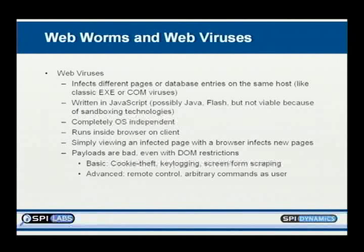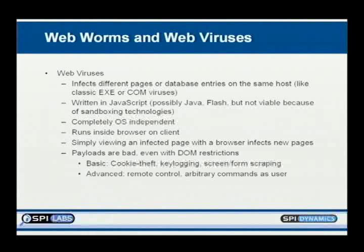Web viruses are completely OS-independent because they run in something in the browser that interprets them — a JavaScript interpreter, a Flash interpreter, a Java virtual machine. They'll run on a Linux box with Firefox, or an OpenBSD box. The key difference from web worms: these run on the client's machine, not the server. Simply viewing an infected page, the HTML pulls down Flash or JavaScript objects which execute. Payloads can be bad but there are DOM restrictions — JavaScript can't access local files, nor can Flash or Java unless signed.